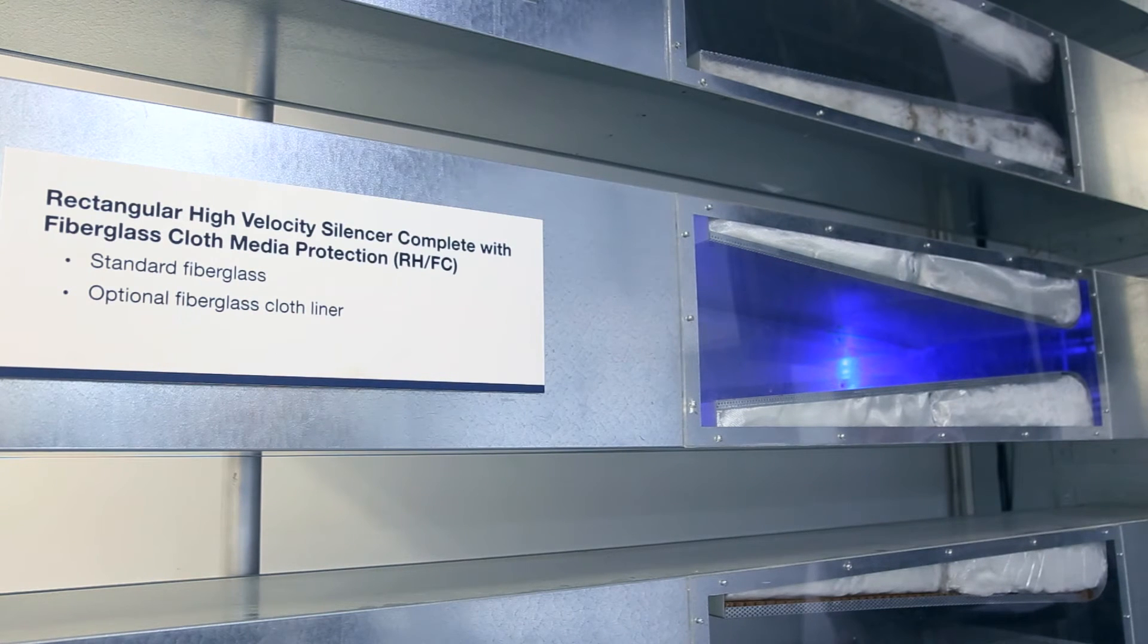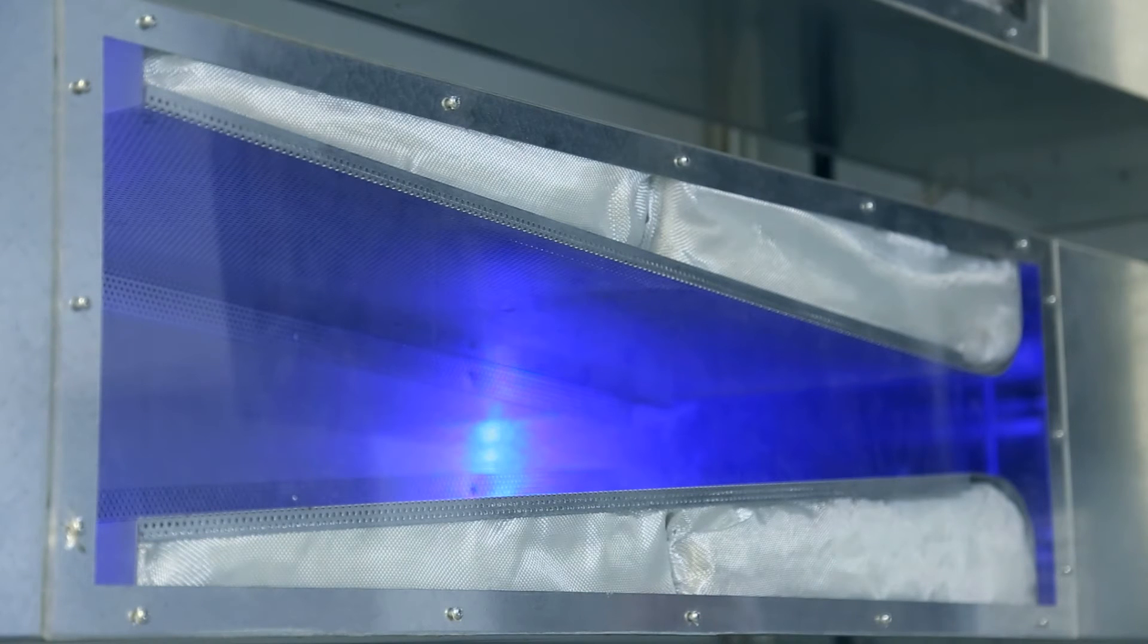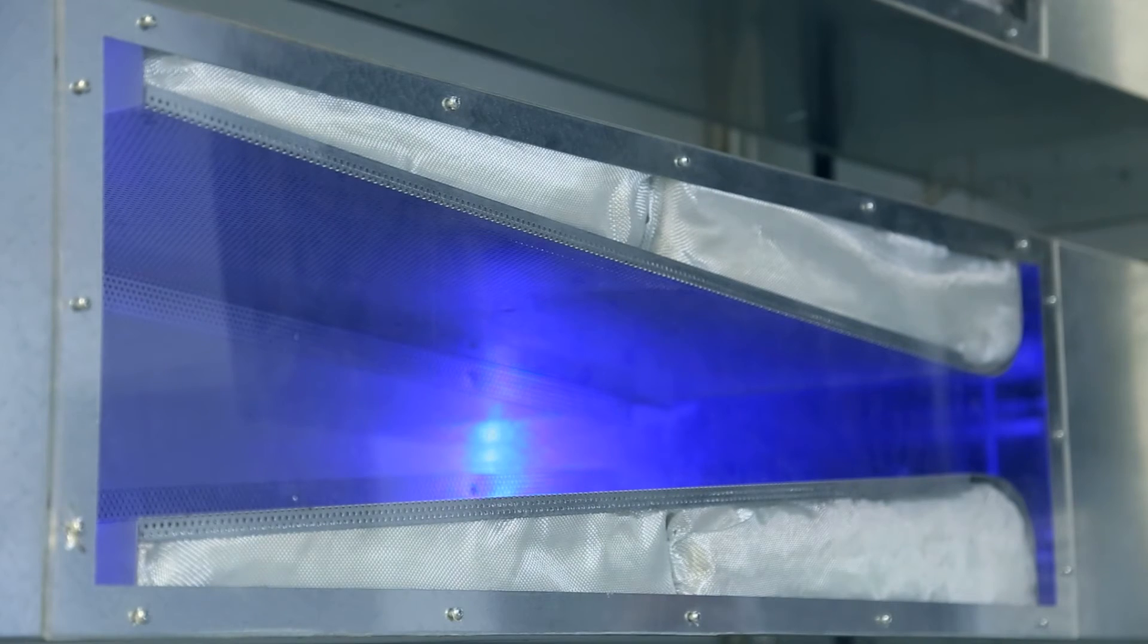We often refer to the fiberglass cloth liner as acoustically transparent as it performs equivalently to that of a standard silencer. We'll run the sound and airflow measurement through this silencer.